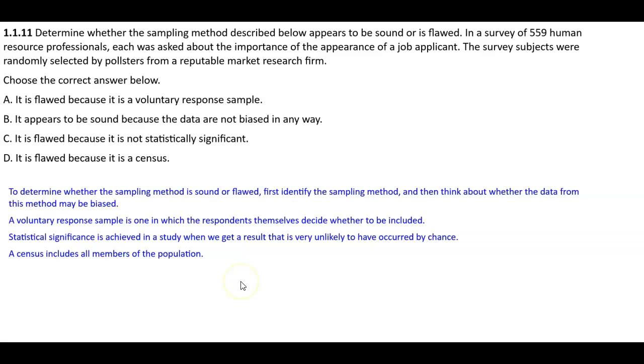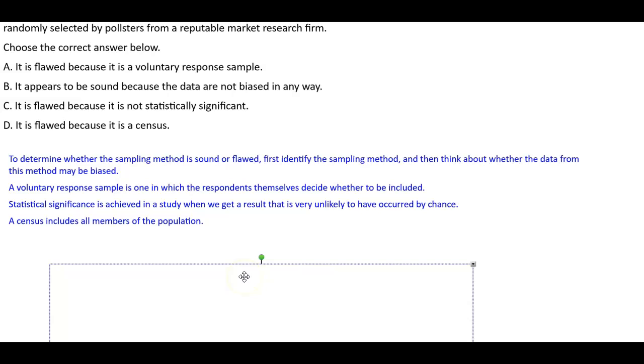Remember, a voluntary response sample is one in which the respondents themselves decide whether to be included. Statistical significance is achieved in a study when we get a result that is very unlikely to have occurred by chance. And a census includes all the members of the population.